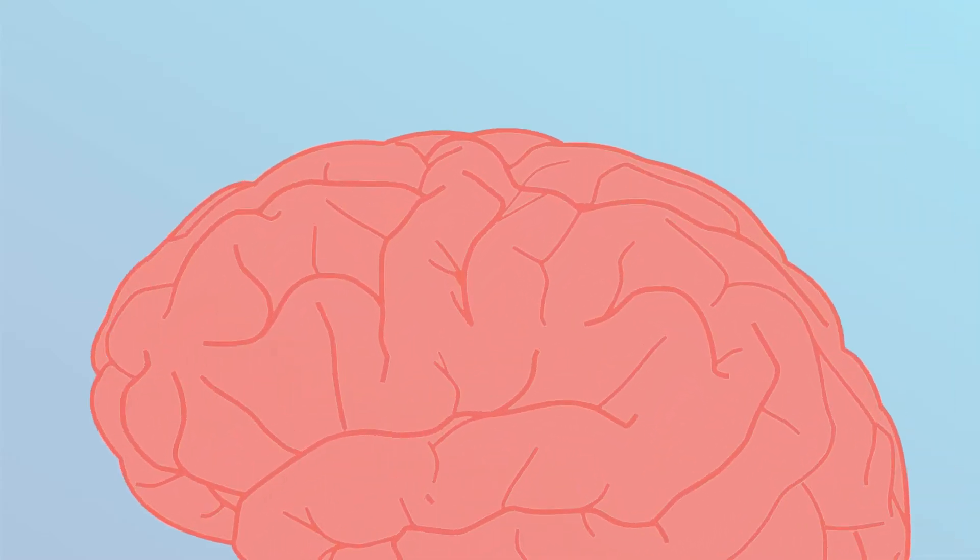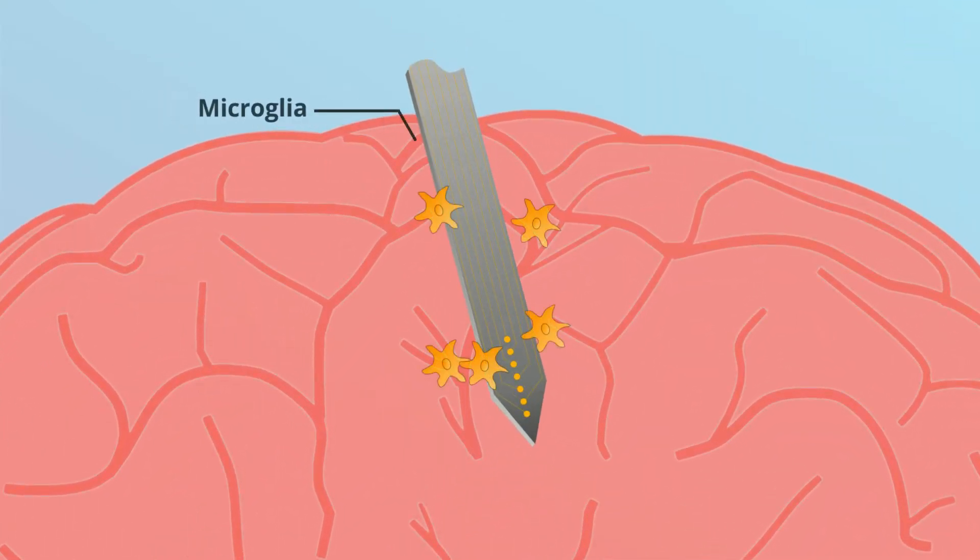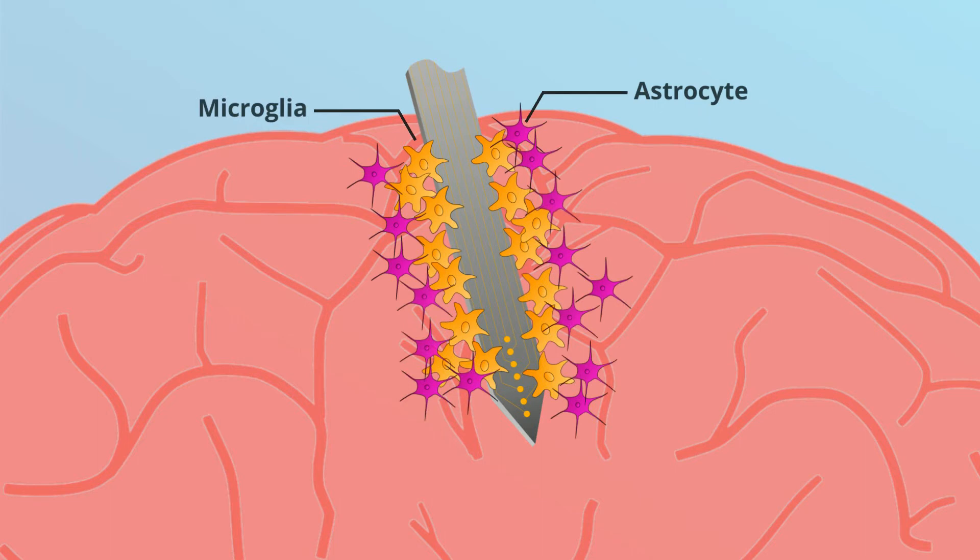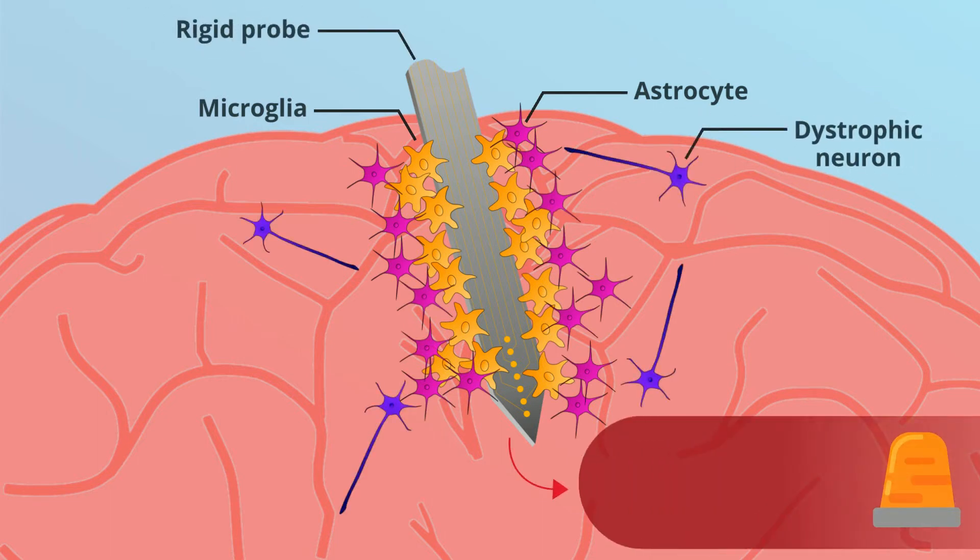Two of the key actors in the foreign body response are microglia and astrocytes. The implantation of a rigid probe will cause three major issues: inflammation, glial scarring, and cell death.